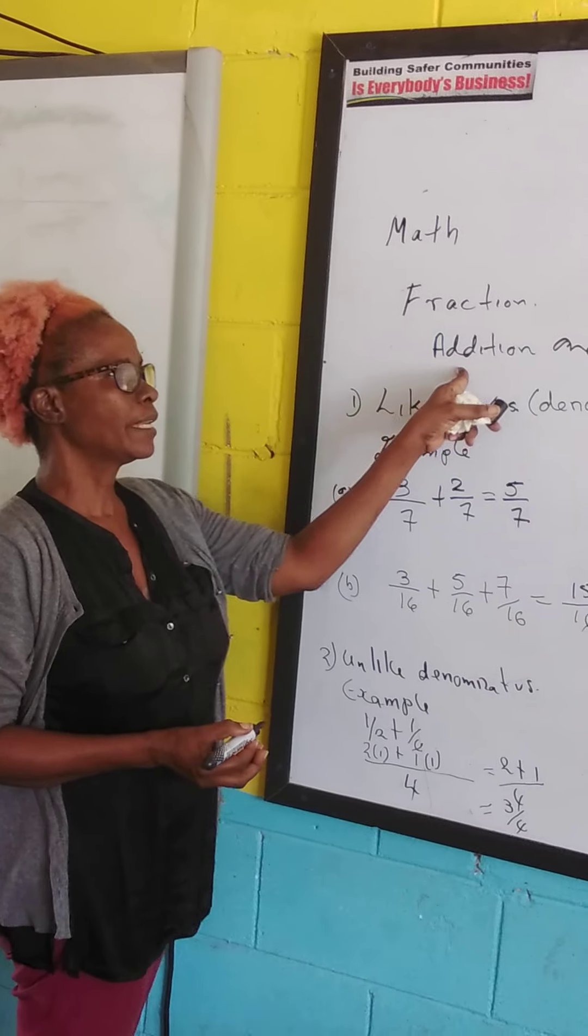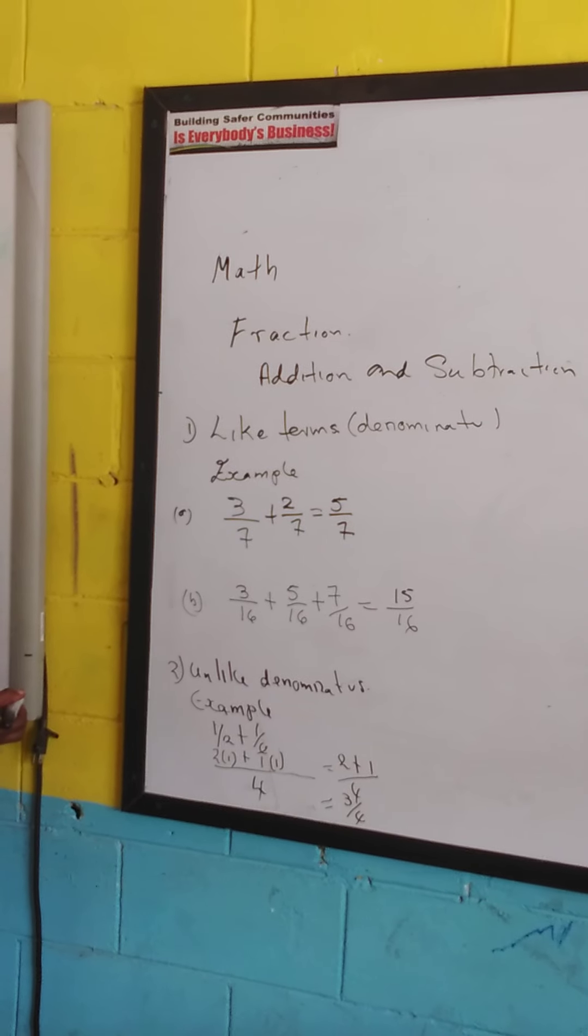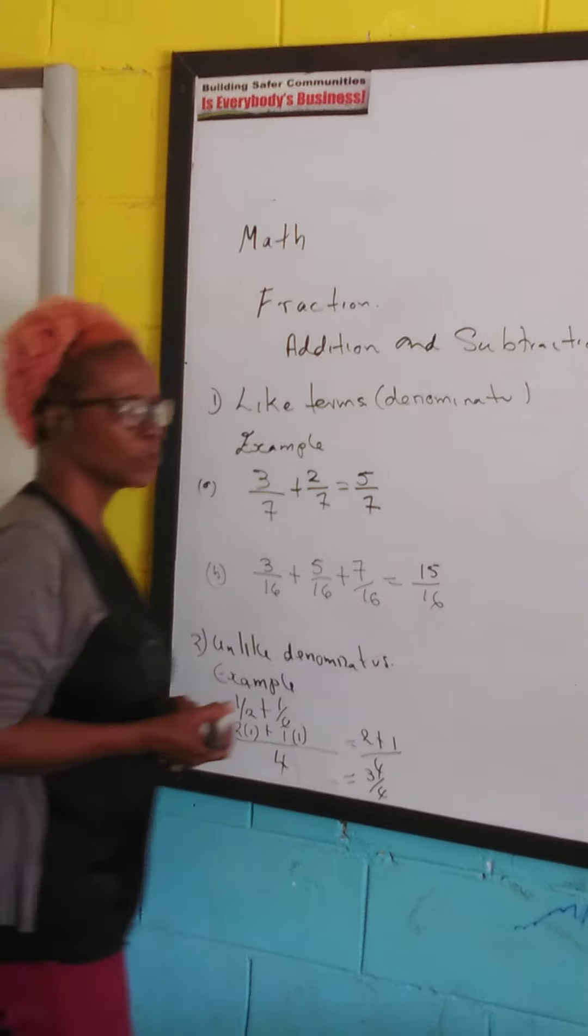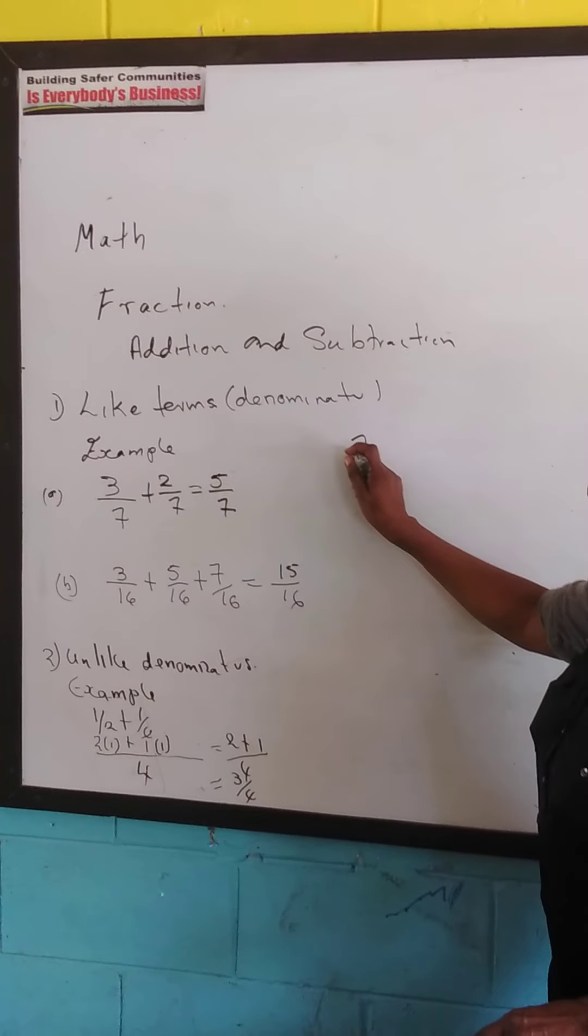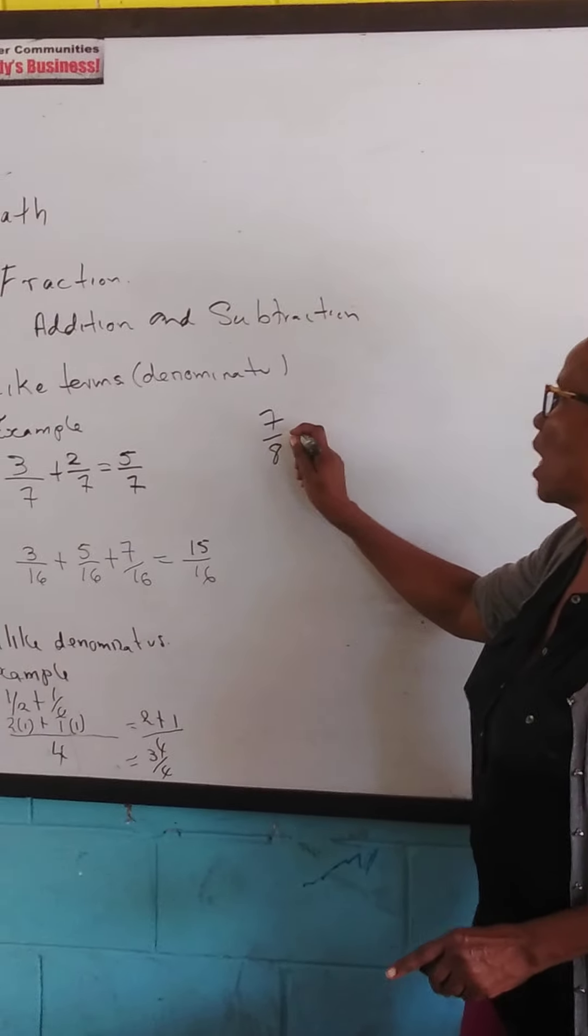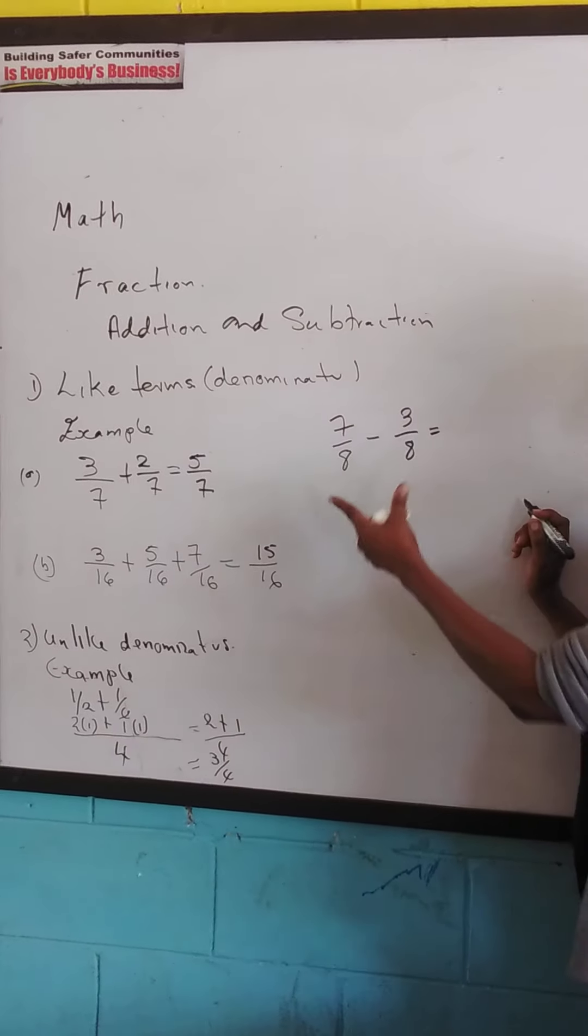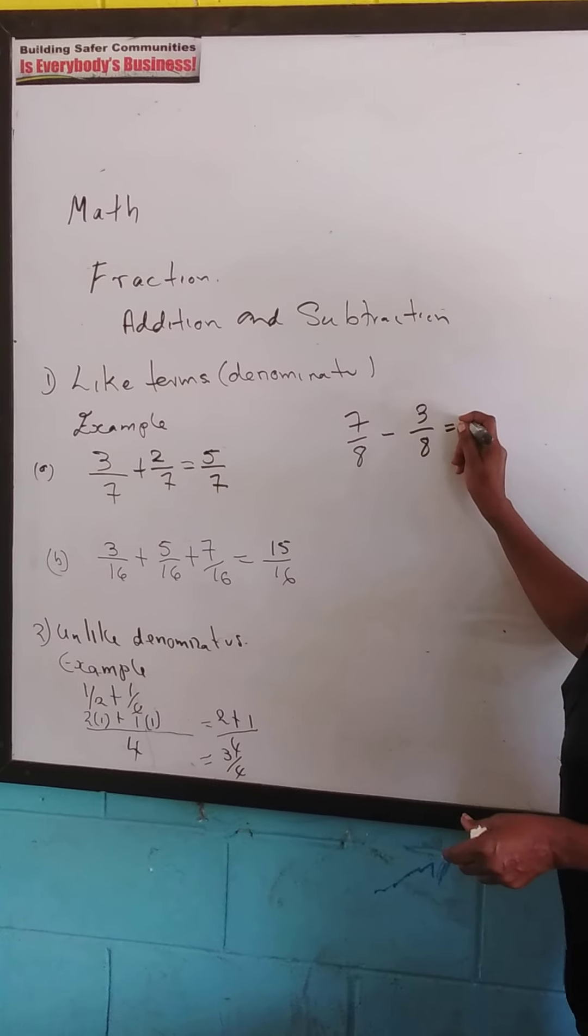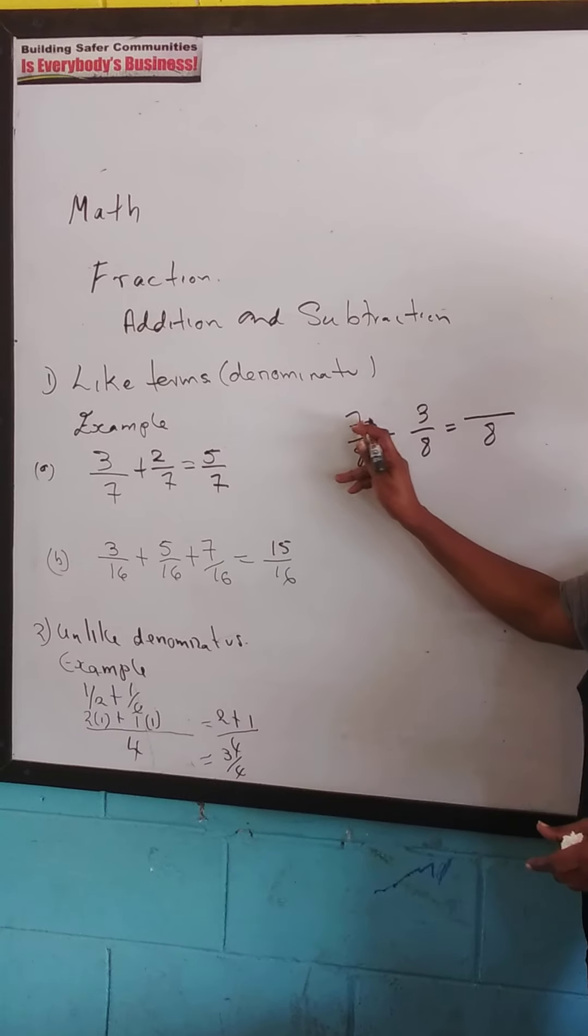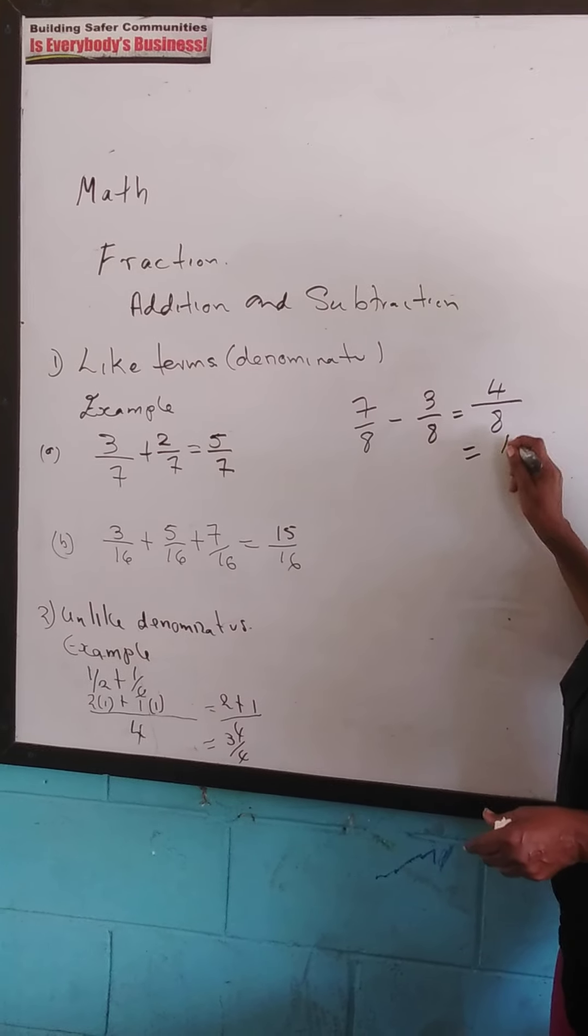Now, our heading is addition and subtraction. So let's just look at some subtractions. When we look at subtractions, we are going to look at the same like denominators. So if we have 7 over 8 minus 3 over 8, what we're doing here, we're going to keep our denominator, which is 8. And we are going to take 7 minus 3 will give us 4, which is the same as a half.